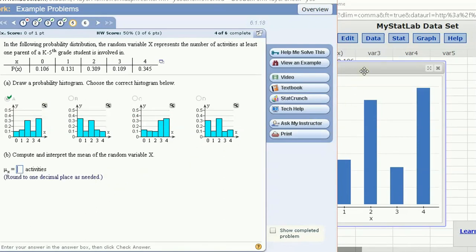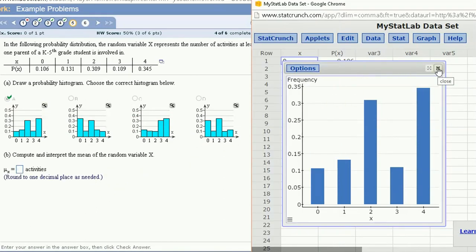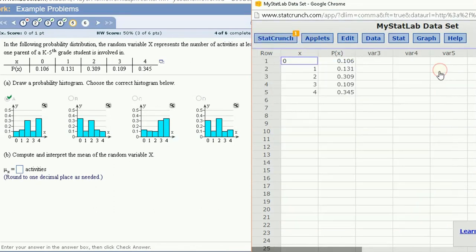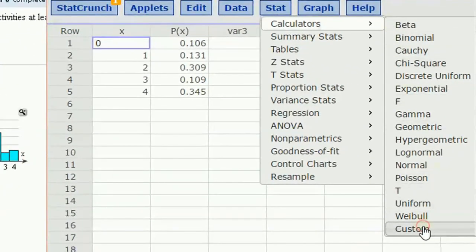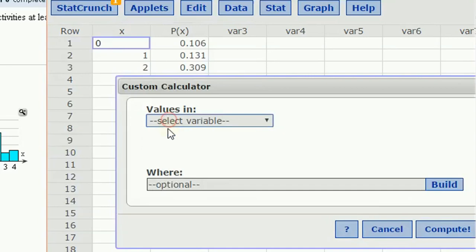So now what I want to do, however, is calculate the mean and the standard deviation of this. To do that, I'm going to actually go under the stat menu, under calculators and choose a custom calculator where my values are in the x column and my weights are in px column.